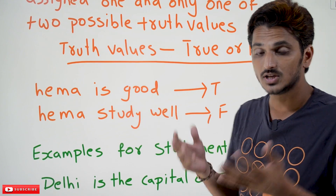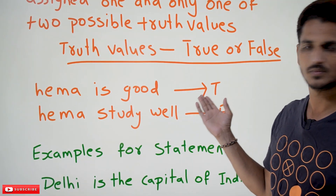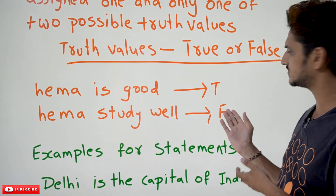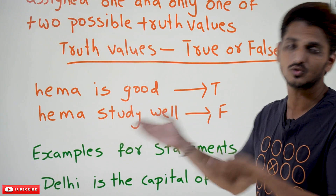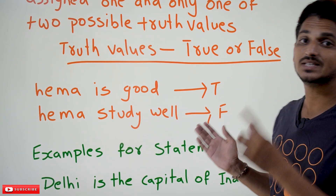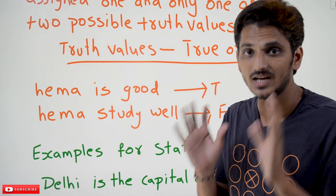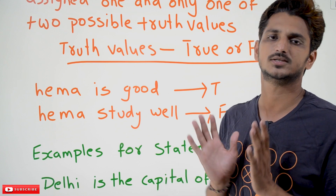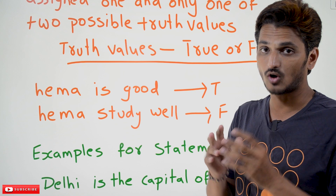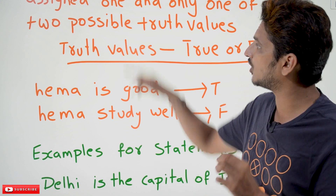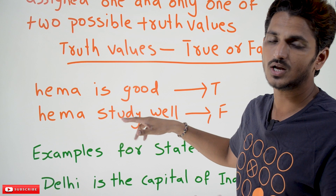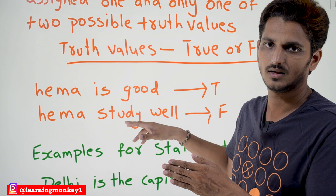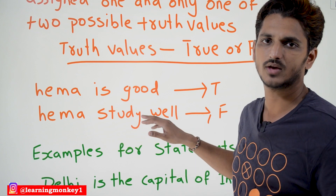'Hema is good' — if she is good, you say it as true. 'Hema studies well' — if she studies well, this statement is true. If she doesn't study well, you say it as false. Any one of the truth values we can assign to this statement — either true or false. So if you call it a statement, it has to follow these two conditions. Then only we call it a statement, or primary statement, or atomic statement.